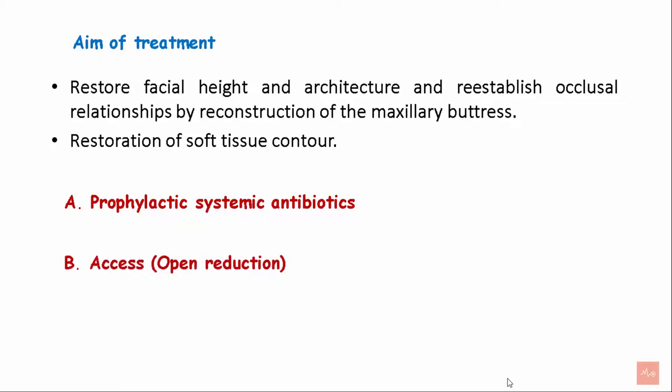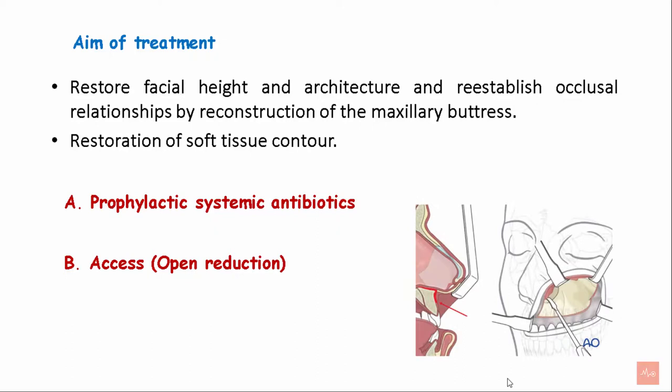The second step involves access or open reduction, which is achieved through the gingivobuccal sulcus incision. Access can also be taken through areas of laceration in the mucobuccal fold.